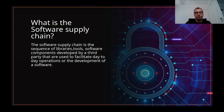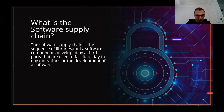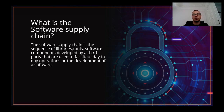So first of all, what is the software supply chain? If we take the formal definition, the software supply chain is a sequence of library tools and software components developed by a third party that are used to facilitate day-to-day operation or the development of a software. Every time you download something — an executable or anything else — you put your trust in a third party to provide you a functionality that you expect. That's basically what the software supply chain is.